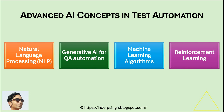The important advanced AI concepts applicable to AI in automation testing include Natural Language Processing. NLP allows AI test automation to analyze written requirements and existing test cases. AI tools and techniques that use NLP enable testers to write new test cases in plain English.